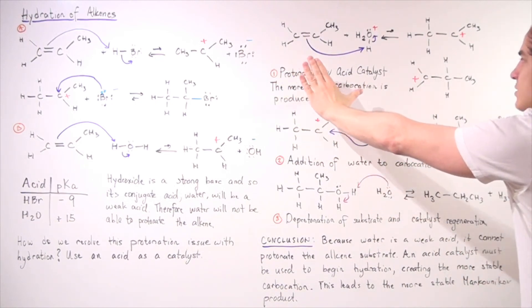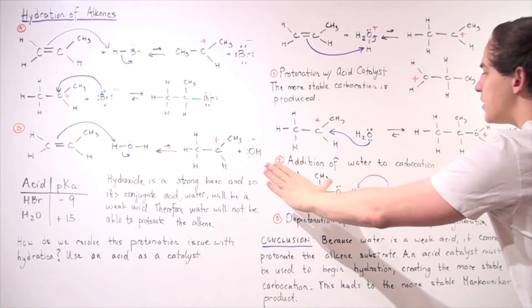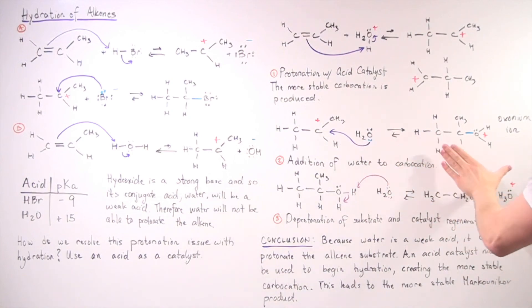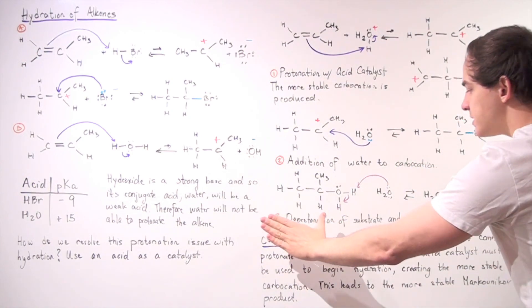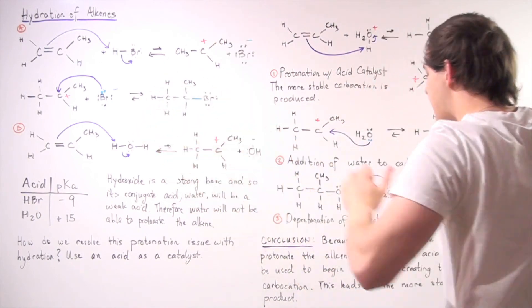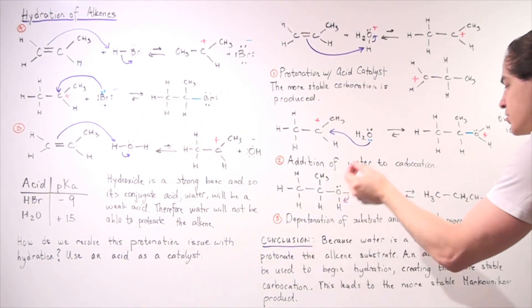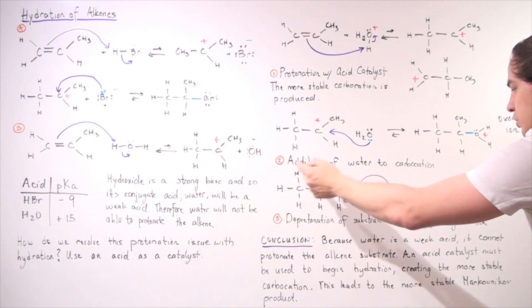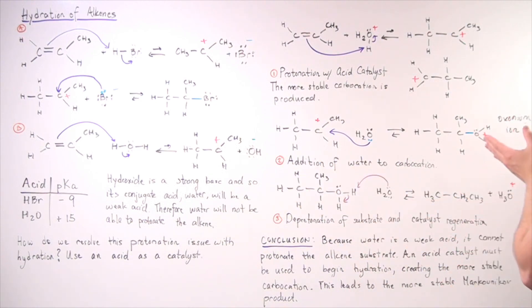So this step is known as the addition of water. So, once again, we have the protonation with acid, then we have the addition of water to the carbocation, and the third step, the step that we did not have in our hydrohalogenation reaction is the deprotonation of substrate, of this substrate, and catalyst regeneration.